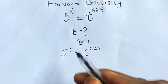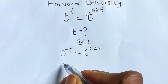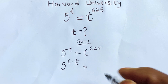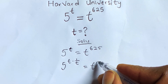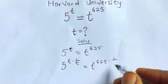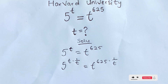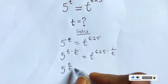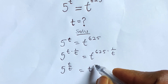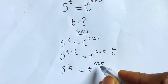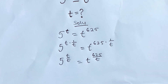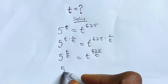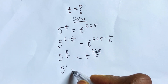We can multiply both sides by the inverse of t. So here we get 5t multiplied by 1 over t, which equals t to the 6/5 multiplied by 1 over t. This gives us 5t over t equals t to the 6/5 divided by t. Since t divided by t gives us 1, this simplifies to 5 to the power of 1.